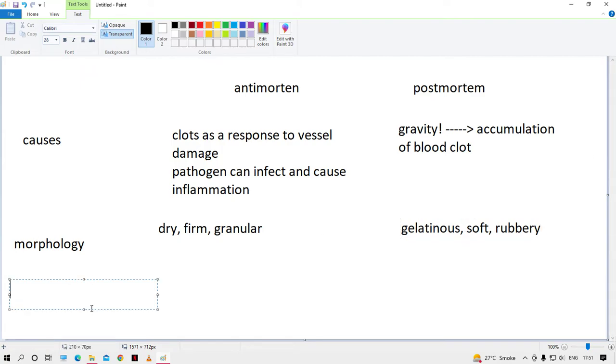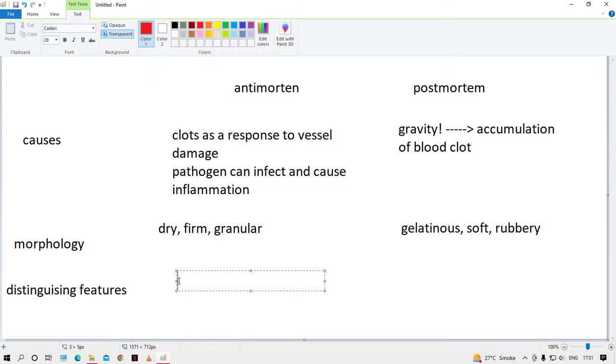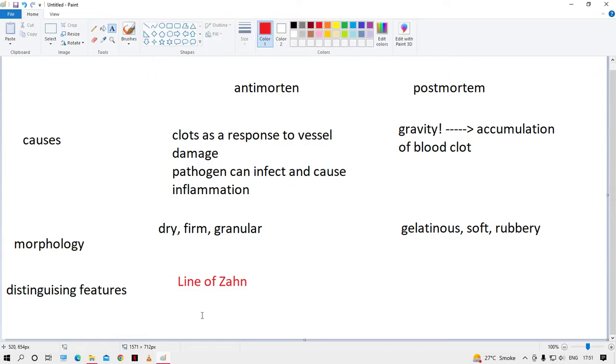Third, we can learn about the distinguishing features. This point is the most important one, I would say. In the antemortem clot, we see the line of Zahn. This is important: line of Zahn. Let me show you diagrams because diagrams are always better.